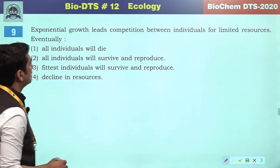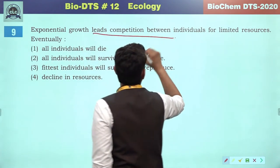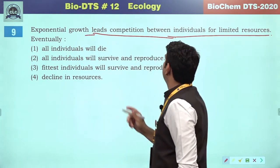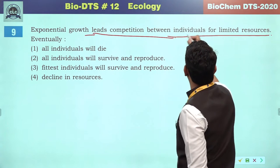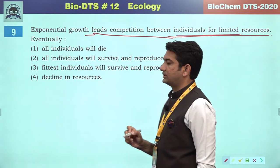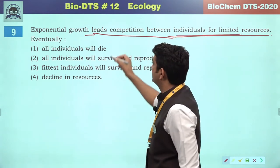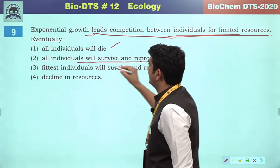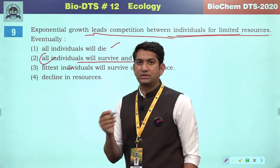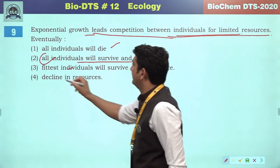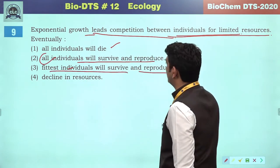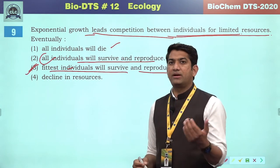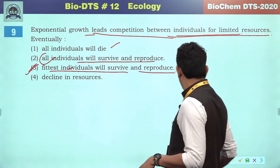Exponential growth leads to competition between individuals for limited resources. As a result, not all individuals will die, nor will all survive and reproduce — that would eliminate competition. The fittest individuals will survive and reproduce — that is the correct answer, because the fittest will survive and reproduce maximally.